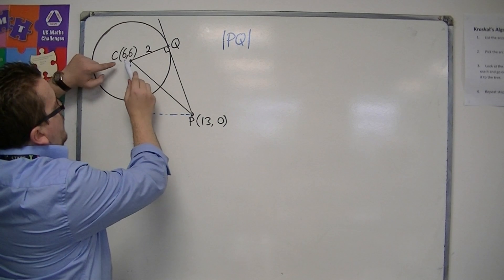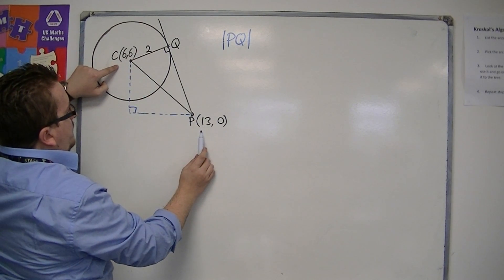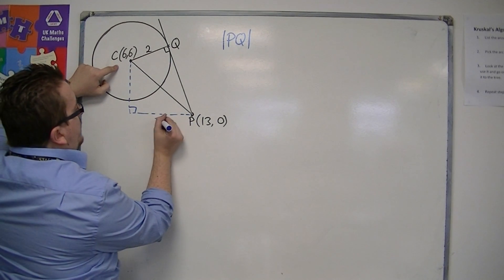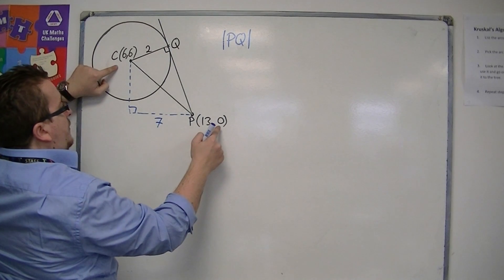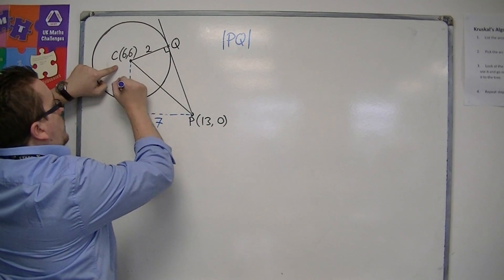So we can see that from 6 to 13, that would be 7, and then from 0 to 6, that would be 6.